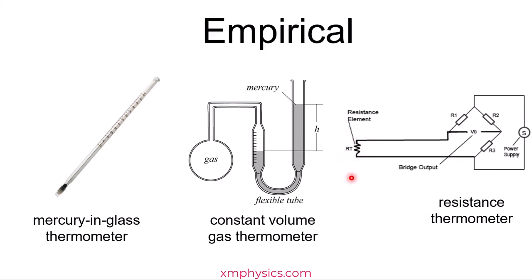Now the centigrade scale has two major problems. The first problem is that it's an empirical scale with no theoretical grounding based on some arbitrarily chosen thermometric property of particular substances.